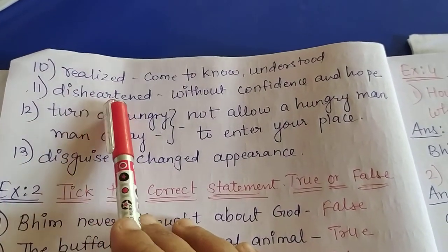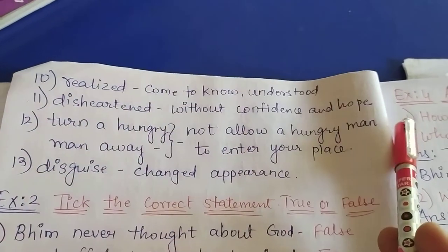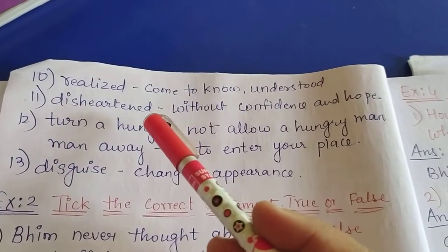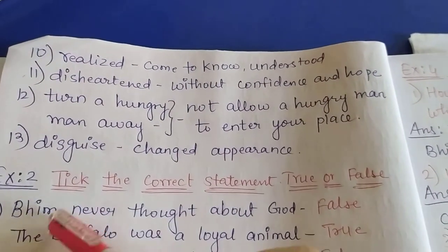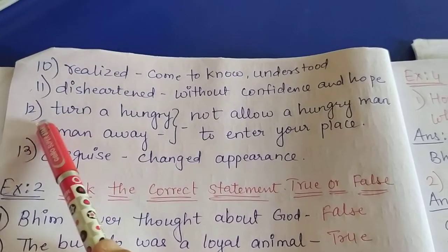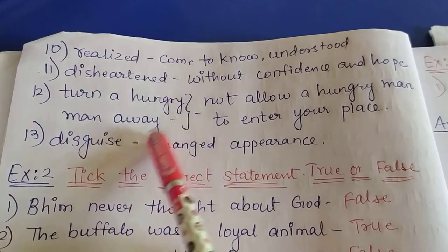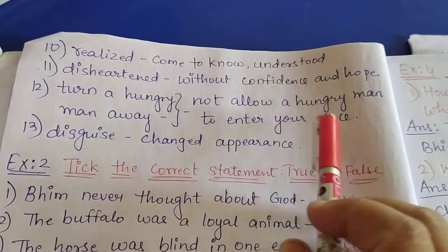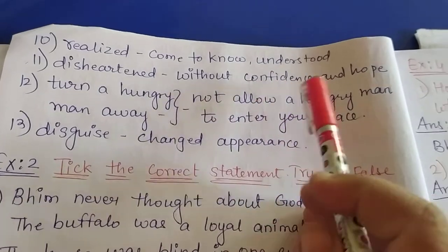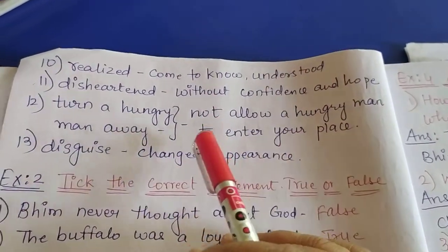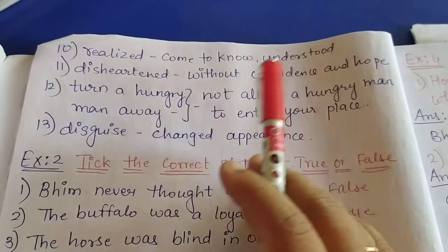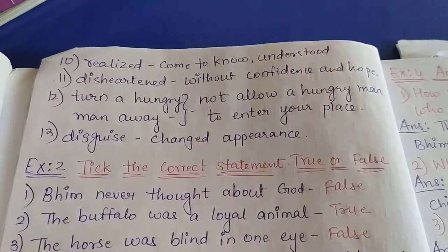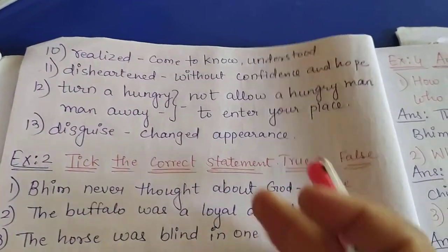Number 11: disheartened — without confidence and hope. Matlab dukhi ho jaana, yaa phir ab kuch bhi nahi hoga aisa maan lena. Number 12: turn a hungry man away — not allowed a hungry man to enter your place. Matlab ki agar koi bhoka aap ke ghar pe aata hai to usko bhaaga dena. Number 13: disguised — changed appearance. Roop badal ke jaate hain.